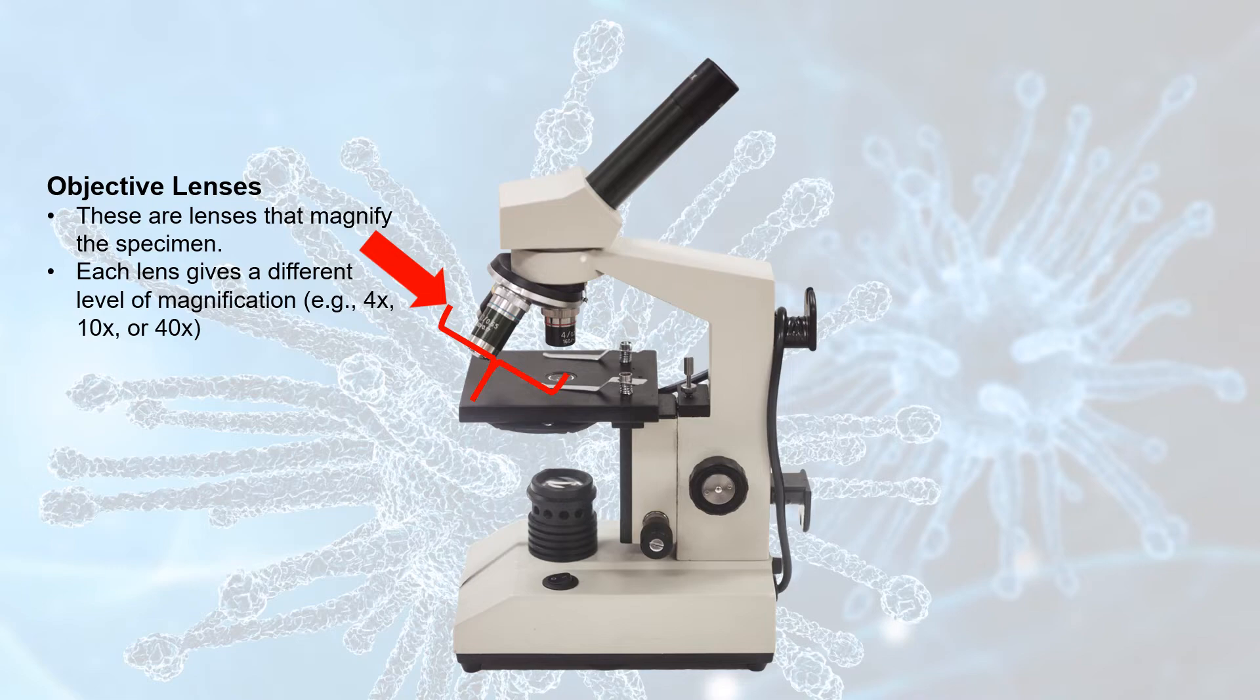Now, if you forget this, or you're using a different type of compound light microscope, you can always find out the magnification of an objective lens by looking right on the side of the lens. The magnification will be engraved or carved right into it.